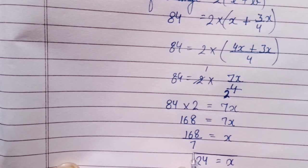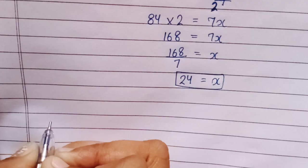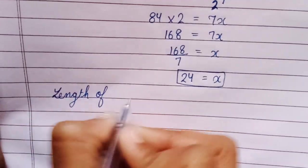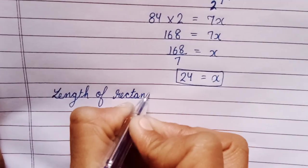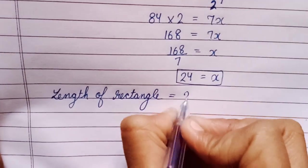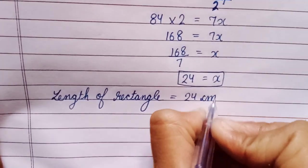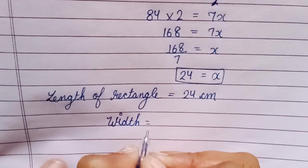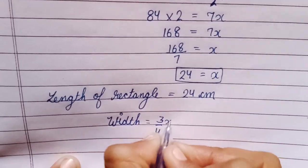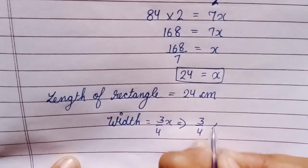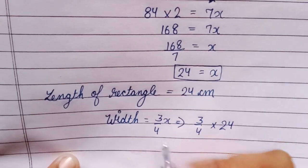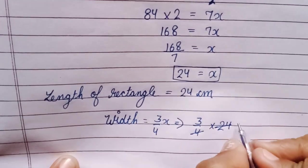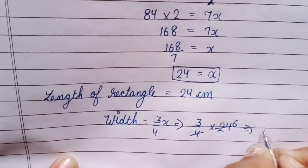After dividing this, we get 24. It means the value of x we get 24. So length of rectangle is equal to 24 cm. And width is equal to 3 upon 4x, it means 3 upon 4 into 24.